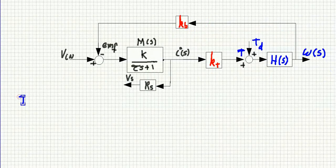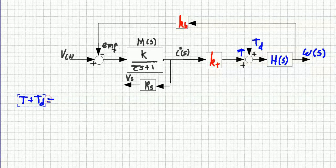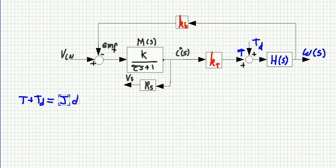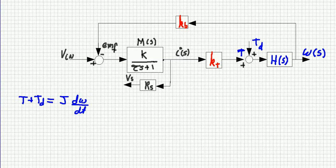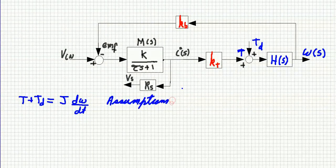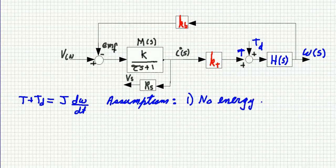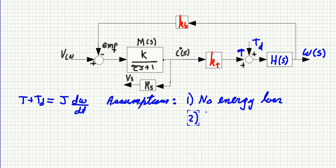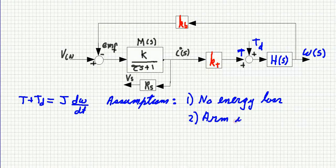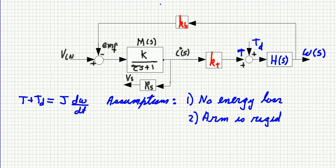We are going to find Hs now. For that, we apply Newton's second law for the rotational case. The net torque equals the moment of inertia times the angular acceleration, that is, the derivative of the angular velocity with respect to time. To obtain this equation, we have made two assumptions. We assume there is no loss of energy: no friction, no dissipation, no damping. And second, the arm is rigid. It can't bend and it can't twist. It's not flexible at all.